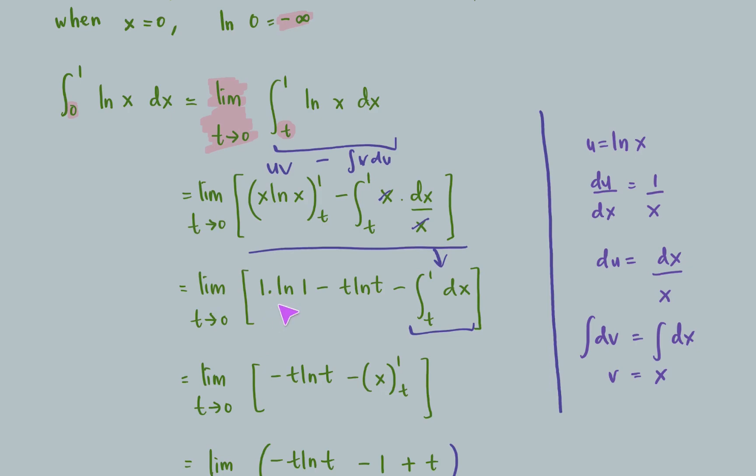So right now 1 times ln 1 is 1 times 0, therefore here is actually 0. Next, minus t ln t here, and then integrate the x would be x, substitute the value of t to 1.